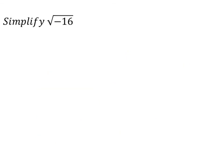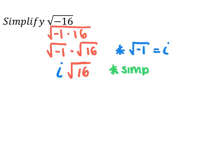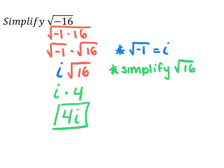In our last example, we take √(-16) and rewrite it as the square root of negative 1 times 16, which splits into the square root of negative 1 times the square root of 16. Since the square root of negative 1 equals i, we rewrite this as i times √16. Now, 16 is a perfect square, so √16 equals 4. Therefore the final answer is 4i.